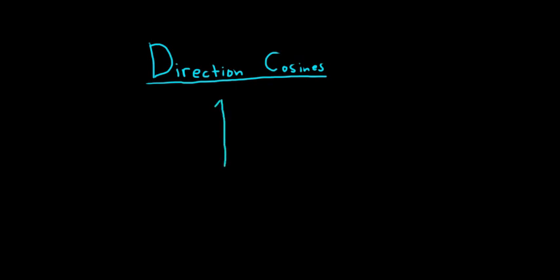So this here will be the z-axis. And this over here will be the x-axis. And this here will be the y-axis. Now we're going to draw a vector which we'll call v. It starts here at the origin and it goes this way here. So this is v.